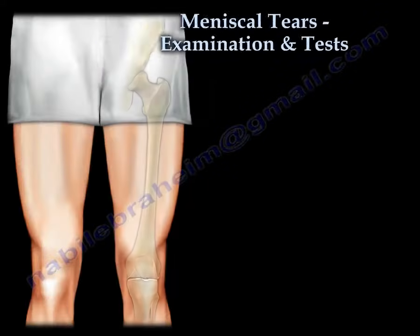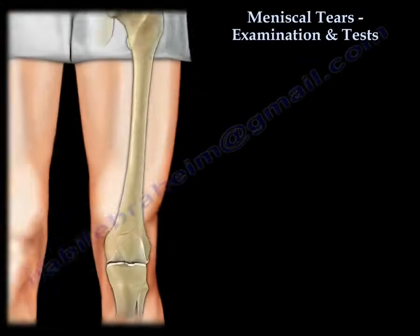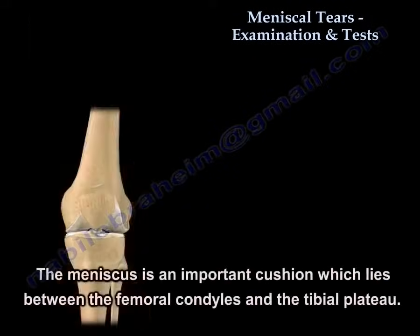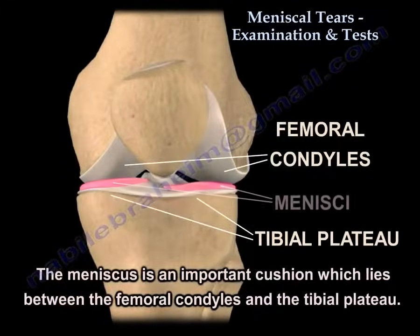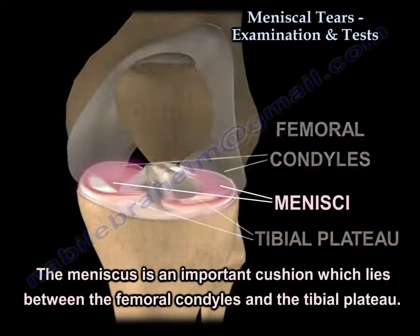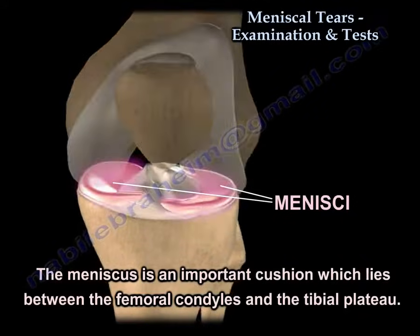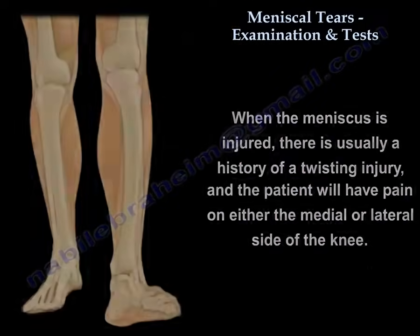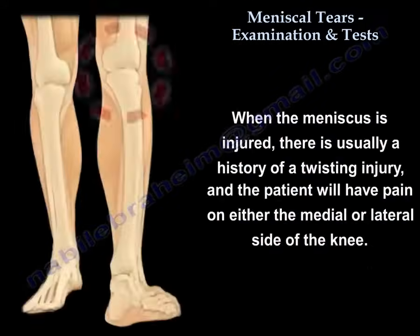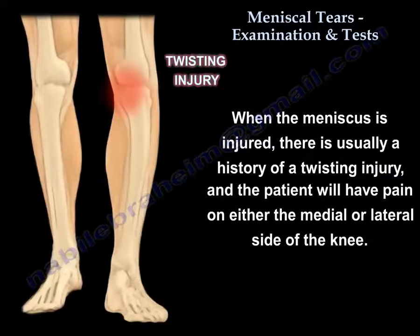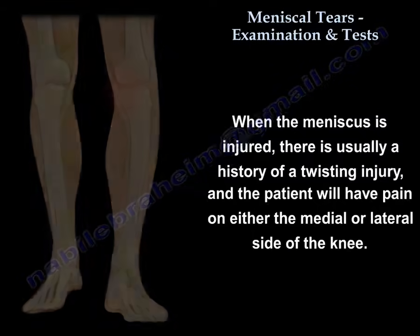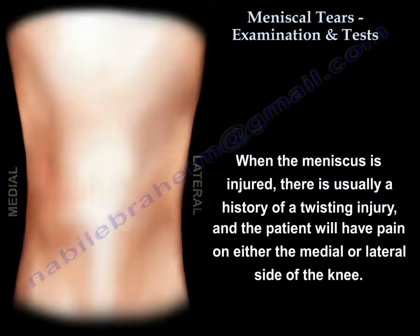Meniscus Tear Examination and Tests. The meniscus is an important structure that lies between the femoral condyle and the tibial plateau. When the meniscus is injured, usually there is a history of twisting injury, and the patient will have pain on the medial or the lateral side of the knee.